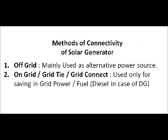Having known that solar power can contribute to huge savings, let us see how it can be implemented. There are two ways solar generation can be utilized: one is off-grid mode and the second is on-grid mode. Off-grid setup uses batteries to store solar power and is generally deployed as an alternative to grid power, whereas on-grid systems can be used to save grid power or fuel of your diesel generator.